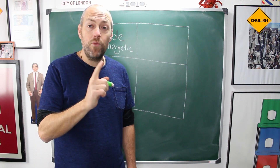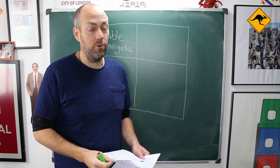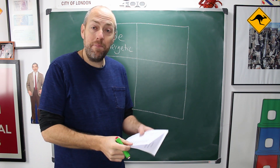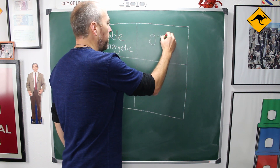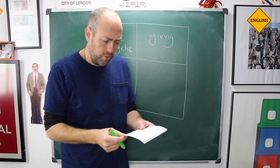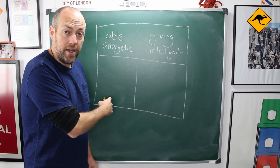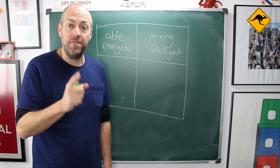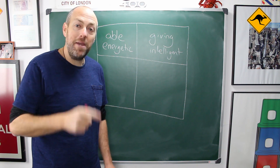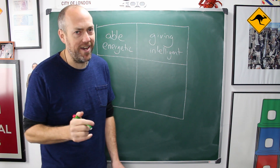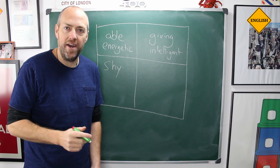Next, we're going to write adjectives that are only on your friend's list and not on your list. So maybe your friends think that you are giving, and also that you are intelligent. In this square, we are going to write adjectives that are on your list but not on your friend's list. So maybe you think that you are shy, and also that you are tense.